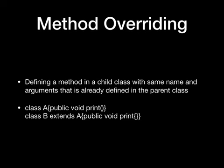if class A has a method called print, the same method can be redefined in class B, where class B should be a child class of class A. Method overriding is also called dynamic binding or runtime polymorphism.